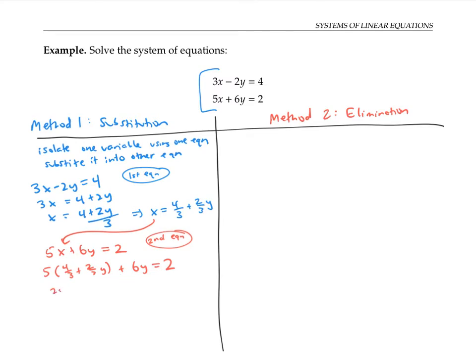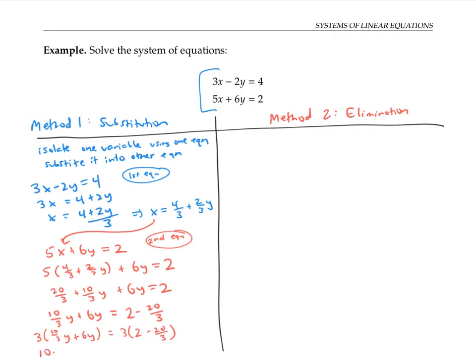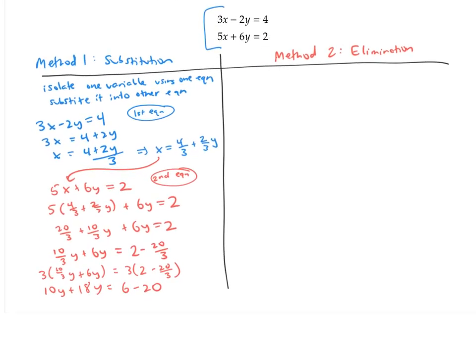First, I'm going to distribute the five, giving me twenty-thirds plus ten-thirds y plus six y equals two. I'll move all terms without y to the right side. Since I don't like working with fractions, I'll multiply both sides by the common denominator of three to clear denominators. Distributing the three, I get 10y plus 18y equals six minus 20, so 28y equals negative 14, which means y equals negative one-half.